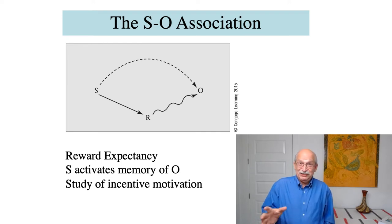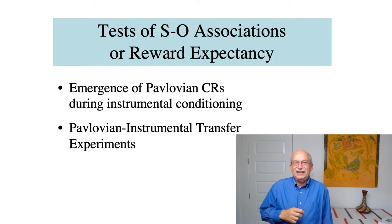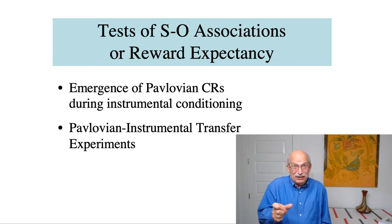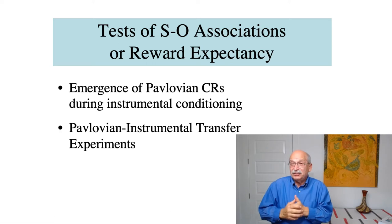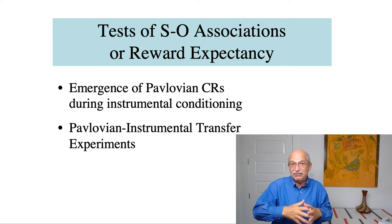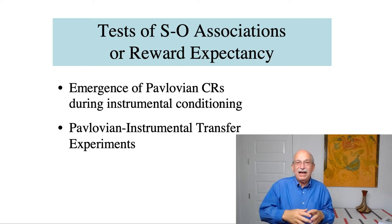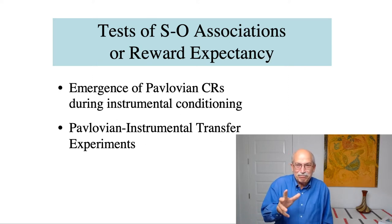If this story holds, we need to provide evidence for the existence of Pavlovian learning in instrumental conditioning situations. The next slide shows the main sources of evidence. One form of evidence is that you can actually observe Pavlovian conditioned responses in an instrumental conditioning situation. For example, if you train a rat to run down an alley, the rat will start to salivate as it gets close to the goal box — so you get salivary conditioning during instrumental training involving food as a reinforcer. There are complications with that kind of evidence, so I'm not going to present a specific experiment for it.